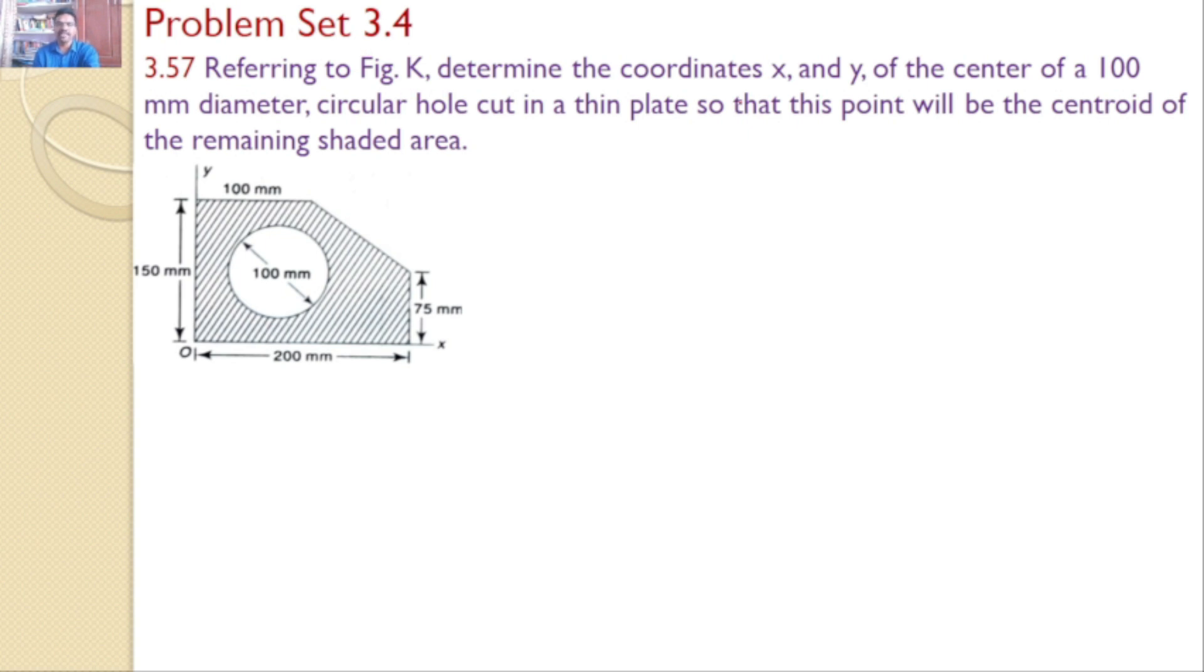Referring to figure K, determine the coordinates x and y of the centroid of a 100 mm diameter circular hole cut in a thin plate. This point will be the centroid of the remaining shaded area.